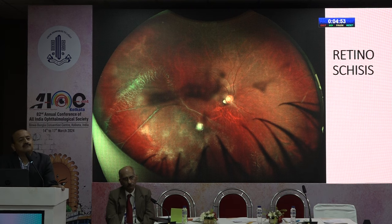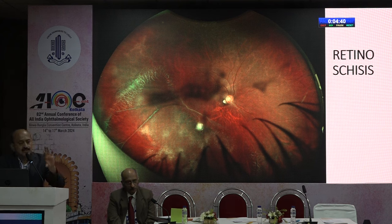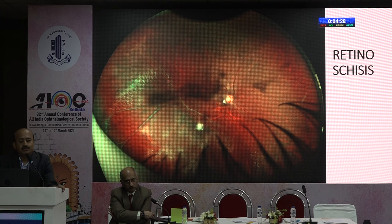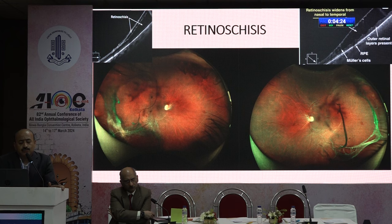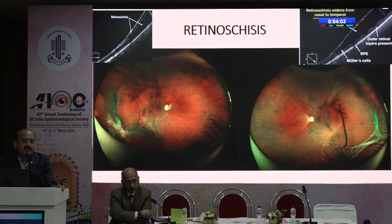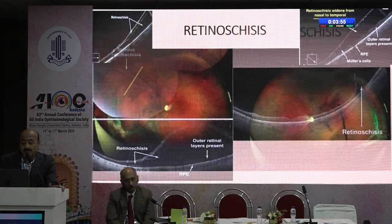Retinoschisis involves a split in the retinal layers. Because the split is occupied by transparent retina, the inner retinal blood vessels appear to float in the vitreous cavity — you see floating blood vessels in the vitreous. On OCT you will see the typical splitting of retinal layers. Most of these patients just need observation unless they develop a rhegmatogenous element. There is no treatment for this degenerative condition — no role for laser — unless the patient develops a schisis-related retinal detachment.